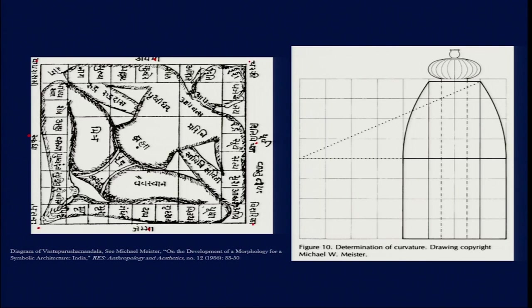Even though it is a small square structure in which the deity figure is installed at the centre, this small structure is actually a metaphor of the entire universe in Hindu belief. This particular ground plan is prevalent in many Hindu temples across the north, western, eastern, and southern parts of India, and it is a central part of how the Garbhagriha or sanctum sanctorum is constructed.